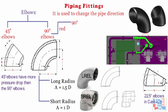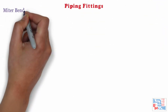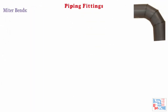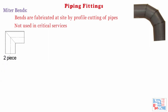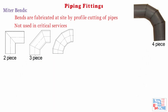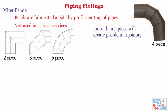We also have 90-degree reducing elbows, used to change direction and pipe size simultaneously. Miter bends: any bend with more than 1.5D bending radius has to be made as per requirement. For large diameter piping, bends are fabricated by profile cutting of pipes and are called miter bends. These are normally not used in critical services. Miter bends with 2-piece, 3-piece, 4-piece, or 5-piece construction can be made — it should not exceed 5-piece, as more joints will create problems. Like elbows, we also have 90-degree and 45-degree miter bends.